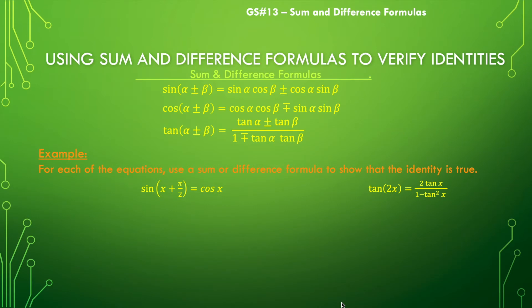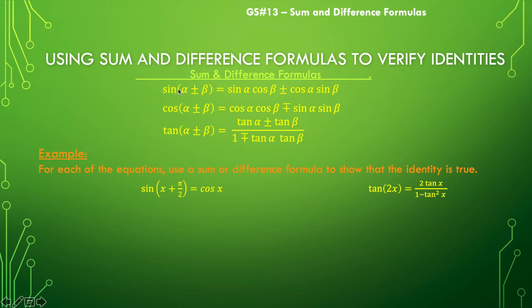I've got three examples that we're going to look at together. For each of these equations, we are going to use a sum or difference formula to show that the identity is true. Let's start with the equation on the left: the sine of the quantity x plus pi over 2 is equal to the cosine of x. We want to think about this in terms of a sine of a sum, and then use our sum formula for sine to expand the left-hand side.